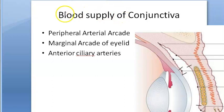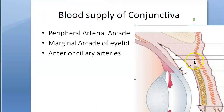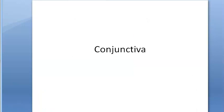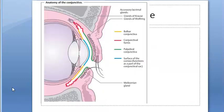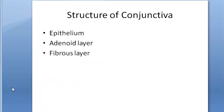Hello, in this video let us look at blood supply of conjunctiva. So far we have looked at what conjunctiva is, the parts of conjunctiva - palpebral conjunctiva, bulbar conjunctiva, conjunctival fornix, and many sub-parts. Then we saw what conjunctival sac means, and then the structure of conjunctiva.